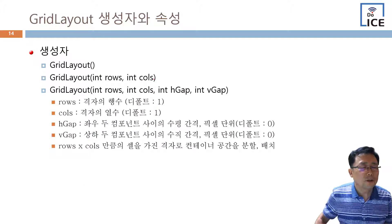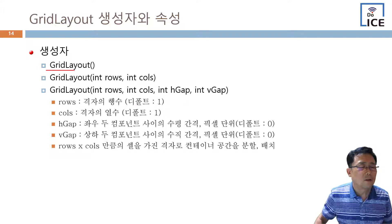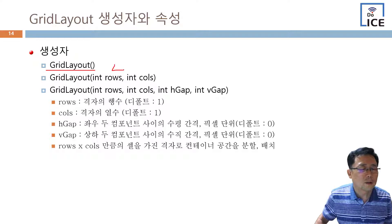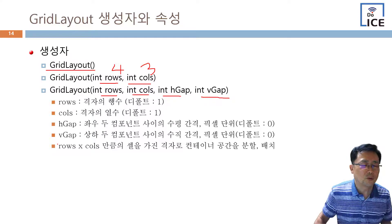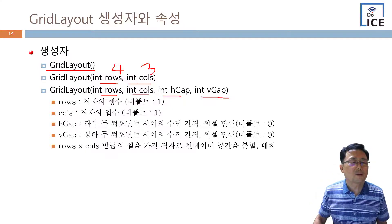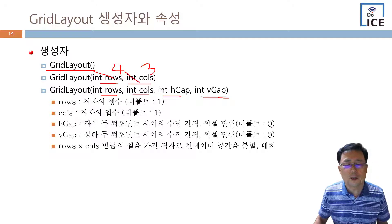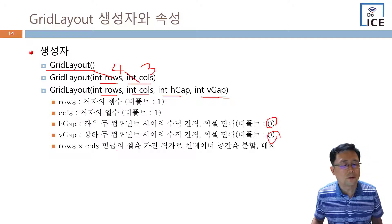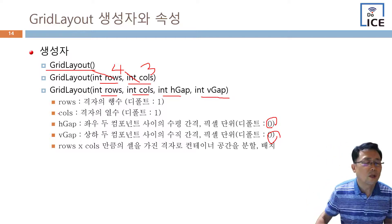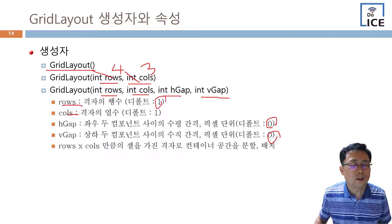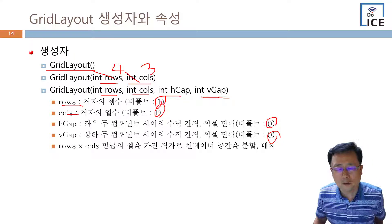그리드 레이아웃의 생성자들과 속성을 보면 디폴트 생성자가 있고, 행이 몇 개고 열이 몇 개다 하는 것이 있고, 행과 열과 호리전탈 갭과 버티칼 갭 이런 식으로 설정할 수 있습니다. 만약 이것들을 생략하면 디폴트 값은 0이고, 행과 열은 디폴트적으로 1이 됩니다.